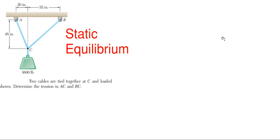We're going to be solving the problem shown on the screen. We have a 3600-pound weight being applied at point C, and then we have two cables, AC and BC, trying to pull back and keep this weight in equilibrium, with both of those cables being in tension.